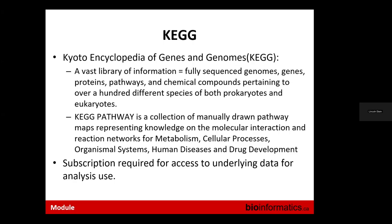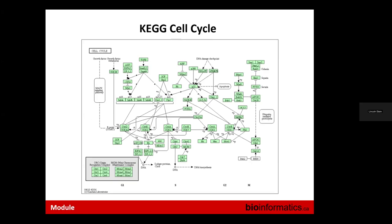KEGG used to be completely open access but in the last 10 years it has become increasingly hard to access the underlying data — you basically now require an institutional subscription to download the data set and do analysis. You can still browse through and look at the maps. A typical KEGG map, such as the cell cycle, describes each molecular interactor using a UniProt number, and each arc using an EC enzyme catalytic number.